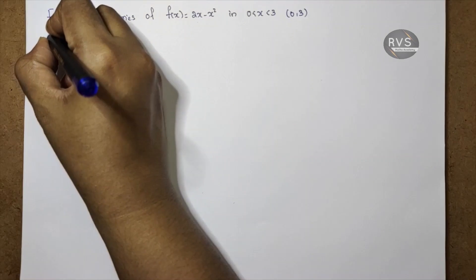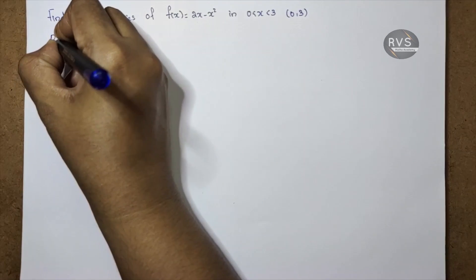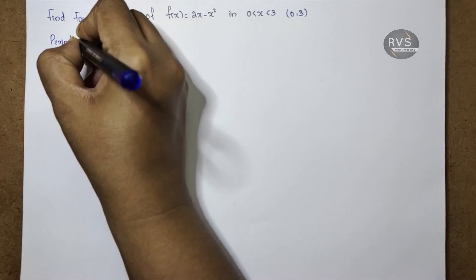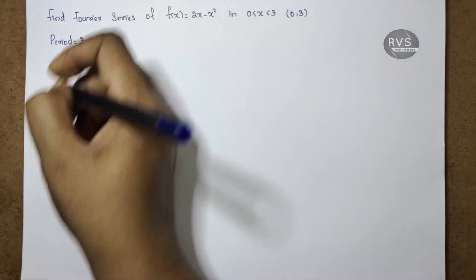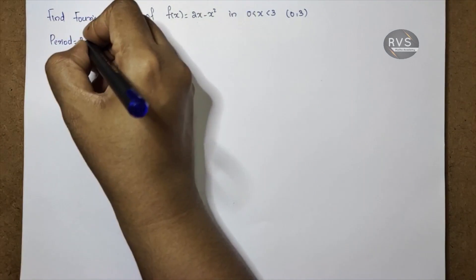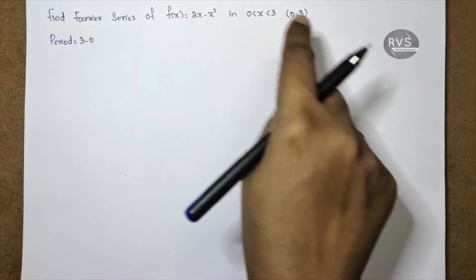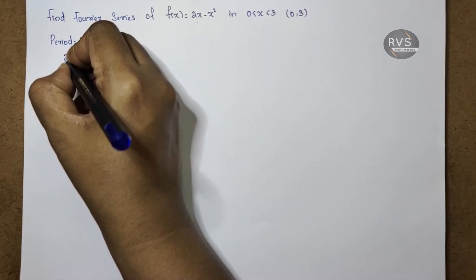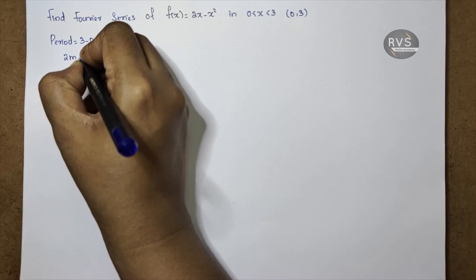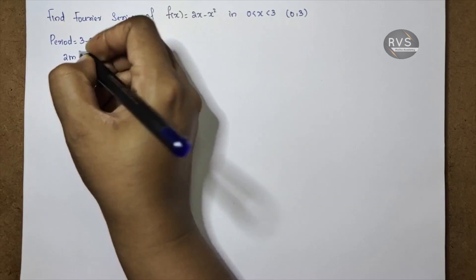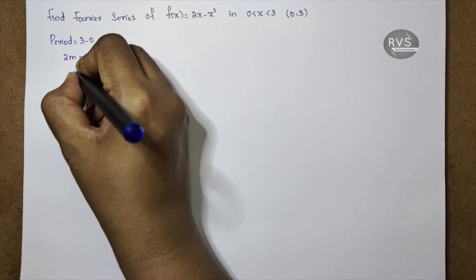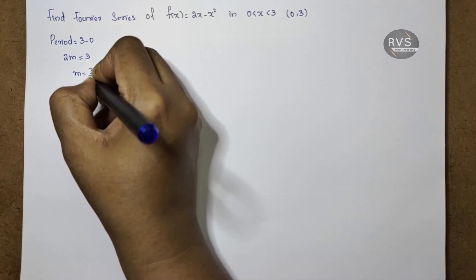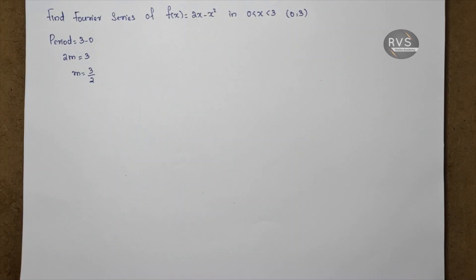The length of the period is 3 minus 0, which is equal to 3. The general formula is 2m, so 2m is equal to 3. Therefore m is equal to 3 by 2. This is our formula.